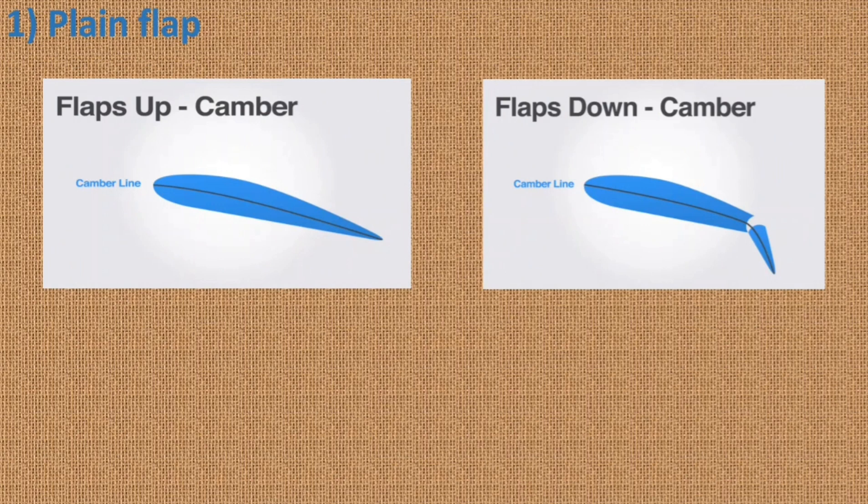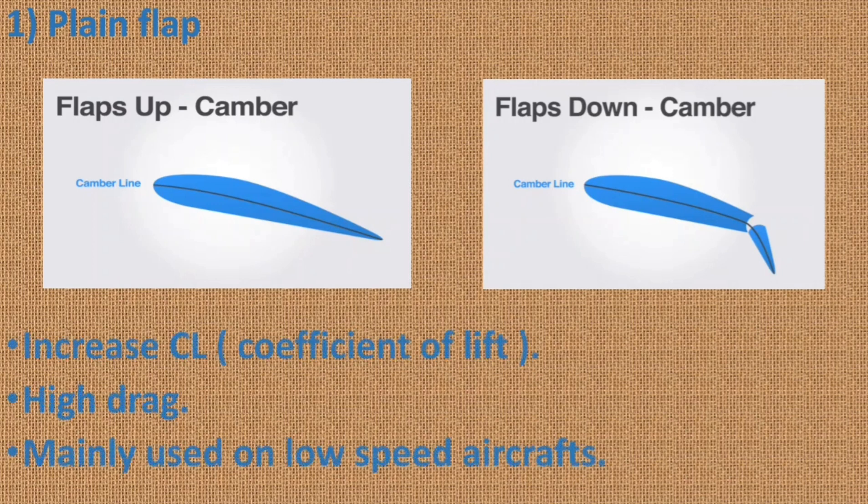There are many different flap designs and configurations in use. Some of the most common flap designs are plain flap. In plain flap, the rear portion of the wing airfoil rotates downward on a simple hinge arrangement mounted at the front of the flap. This downward movement increases the camber of the wing and hence the lift and drag produced. This flap is mainly used on low-speed aircraft.